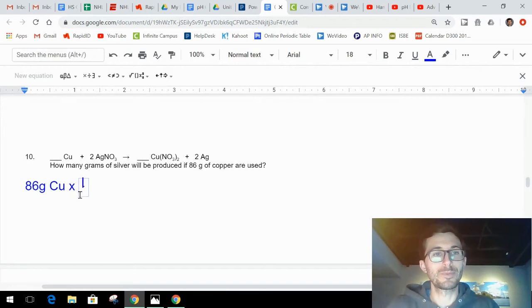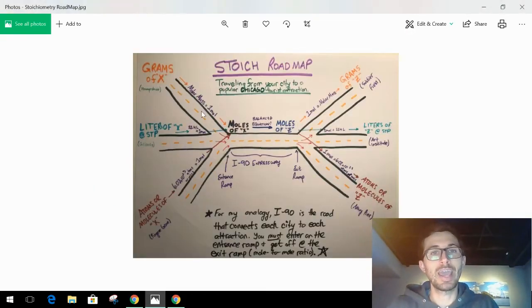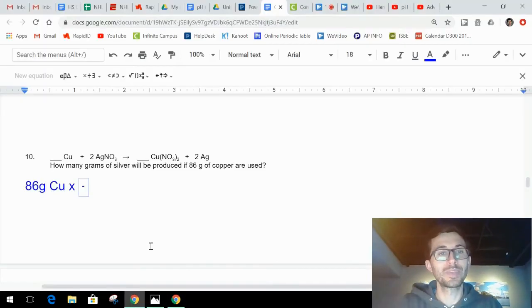First, I have grams so immediately I have to go from grams to moles. Looking at my roadmap, I start with grams, I have to go to moles. There's no other way that I can get to grams of silver. I have to go straight from grams of X, in other words grams of copper, to moles of X, or moles of copper. I got to use the molar mass, so on the periodic table, 63.55 grams of copper is equal to one mole of copper.